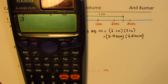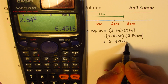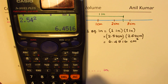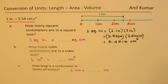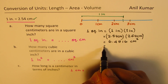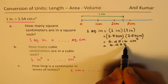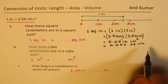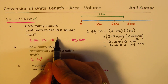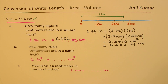So we will calculate the square of 2.54 to get our answer. The square of 2.54 gives us 6.4516 square centimeters. We can round this to three decimal places as 6.452 square centimeters. So one square inch equals 6.452 square centimeters.